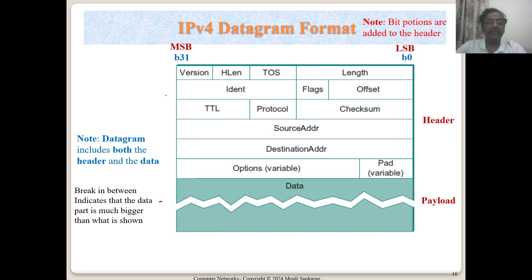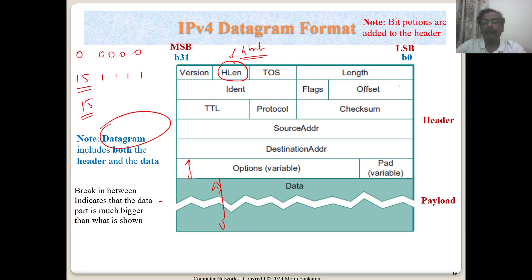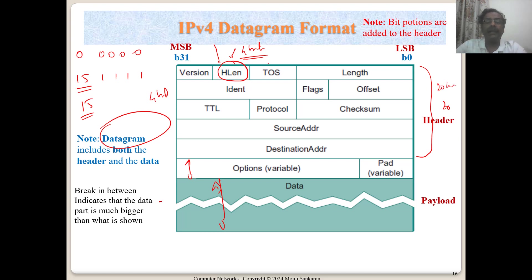An IP datagram includes both the header and the data. Since the header length is variable due to optional fields, there is a header length field (IHL). Only 4 bits are reserved for IHL, allowing a maximum value of 15. The value is expressed in units of 4 bytes: a value of 5 means 5 × 4 = 20 bytes, which is the mandatory minimum header. If optional fields are present, the IHL value increases accordingly.